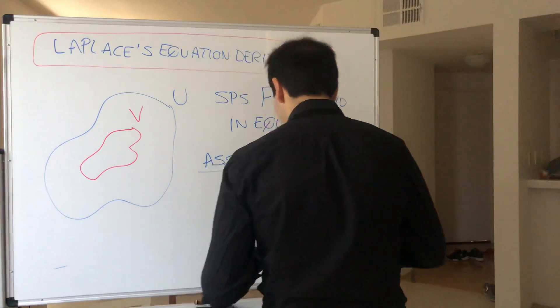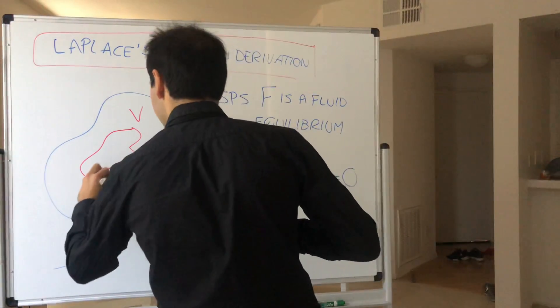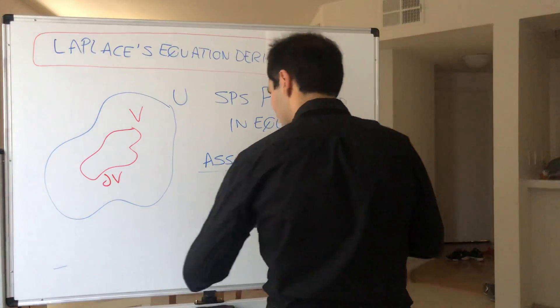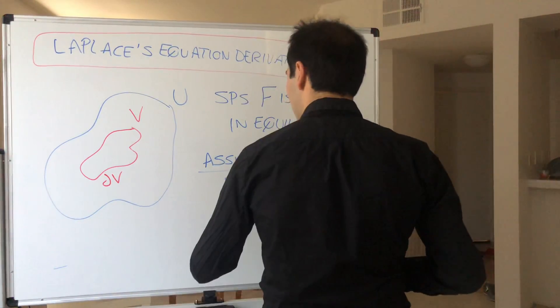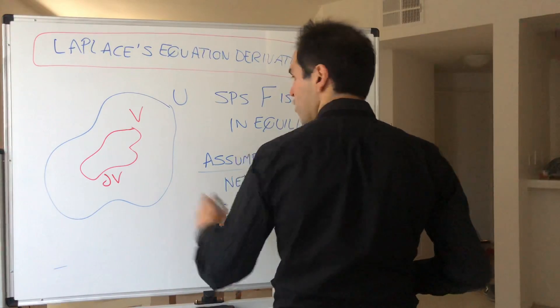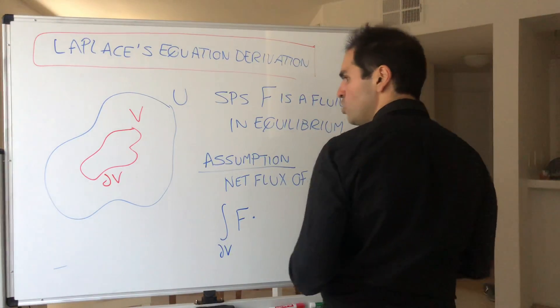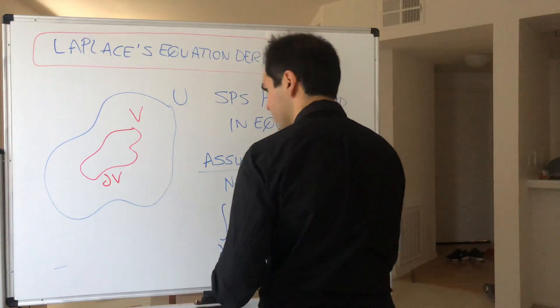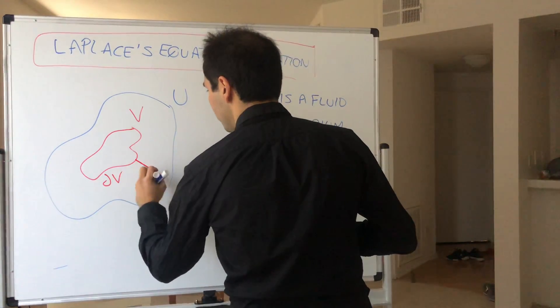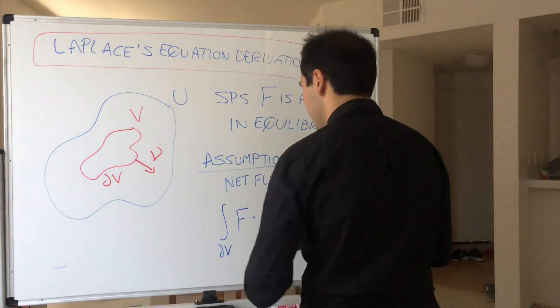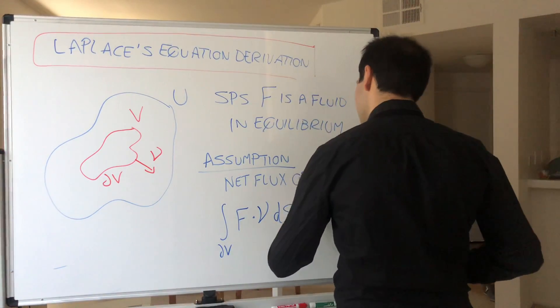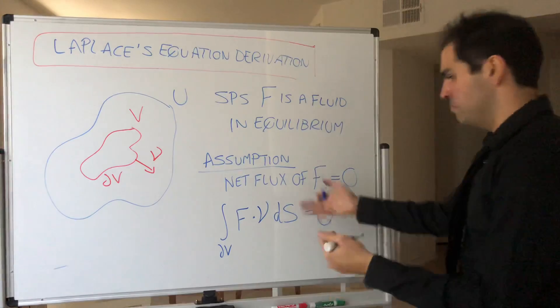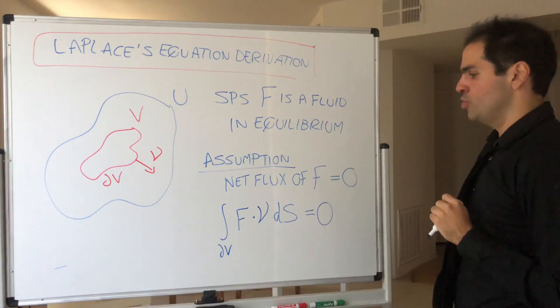So in other words, the integral over the boundary of V, partial V of F dotted with unit normal vector, so let's call this ν, F dotted with ν dS equals zero. That's a net flux and we assume it's zero.